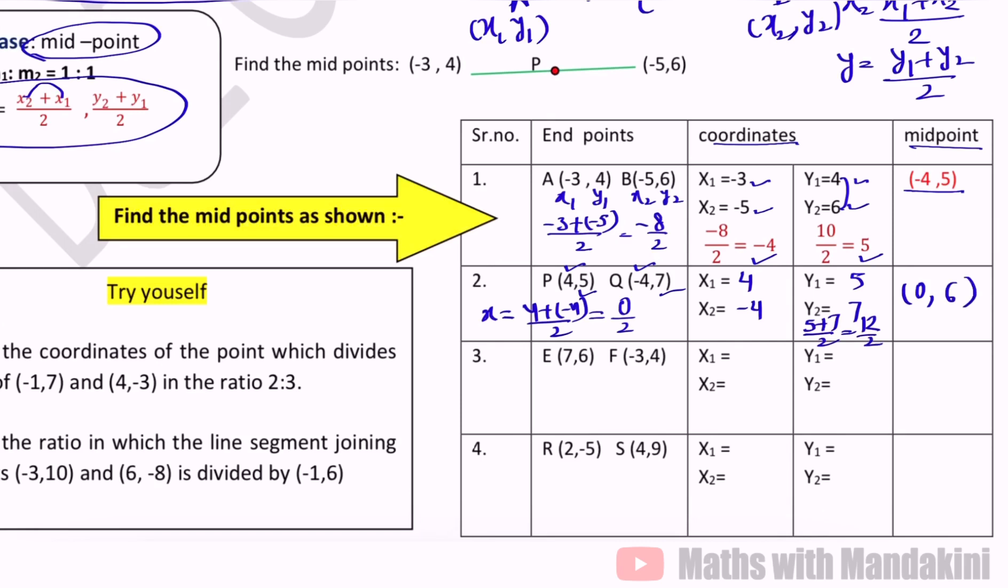Now third, x1 is 7, x2 minus 3, y1 is 6, y2 is 4. So 7 plus minus 3 upon 2, that is 7 minus 3 upon 2, 4 upon 2, we get value 2. And 6 plus 4 upon 2 that is 10 upon 2, yaani 5, so (2,5). Similarly x1 is 2, x2 is 4, y1 minus 5, y2 is 9. So 2 plus 4 upon 2, yaani 6 upon 2 that is 3. And minus 5 plus 9 upon 2 that is 4 upon 2 that is 2, yaani (3,2). Ye hamare values mil gaye.